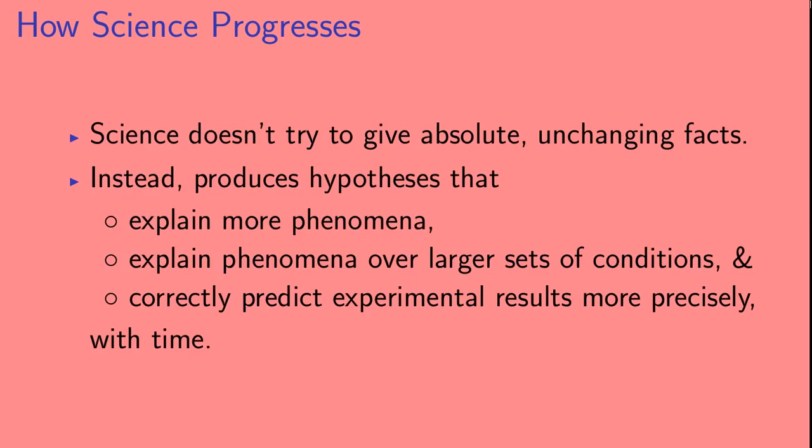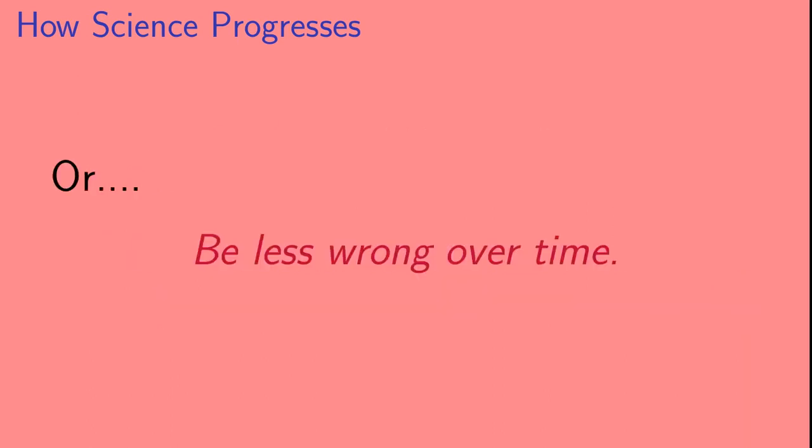Science doesn't try to give absolute, unchanging facts. Instead, it produces hypotheses that explain more phenomena, explain phenomena over larger sets of conditions, and correctly predict experimental results more precisely over time. Or another way of putting this is that the goal of science is to be less wrong over time.